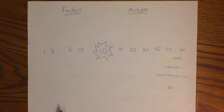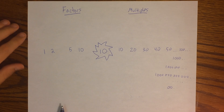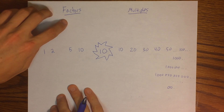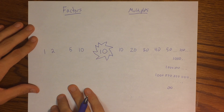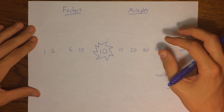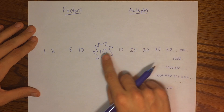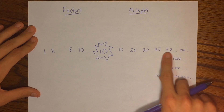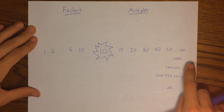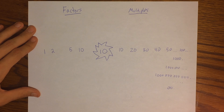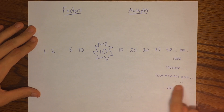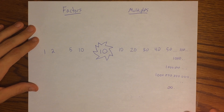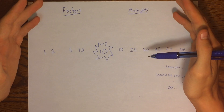Hopefully that gives you an idea of what the difference is. Factors are like the building blocks of a number — each of these numbers can be multiplied into 10. Whereas multiples are the solution of a number being multiplied by another number. In this case our number is 10, and we multiplied by 1, 2, 3, 4, 5, then 10, 100, 1,000 and we just kept going.